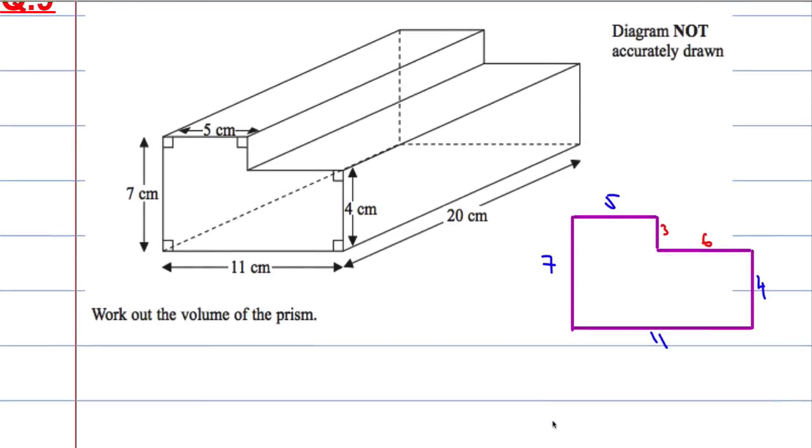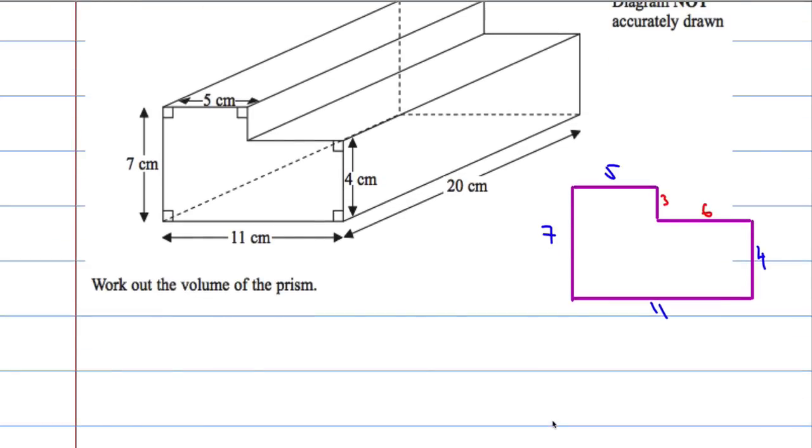So now I have the cross-section sketched—you don't have to do that, but it does help. Now I'm going to work out the area of this cross-section. Because I don't know how to work out the area of an L-shape off the top of my head, I'm going to split it into two rectangles.